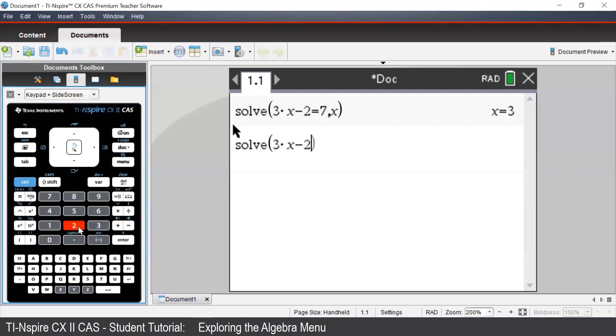To enter an inequality, we need to press control and then the equal button, and then from there, we can select the less than sign.